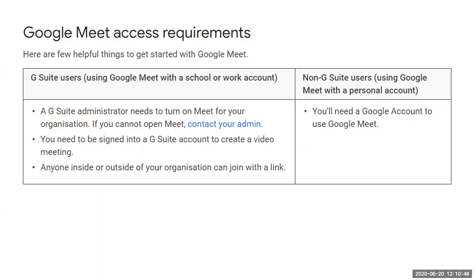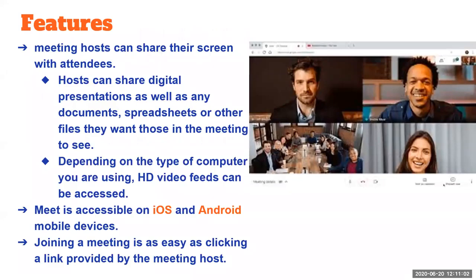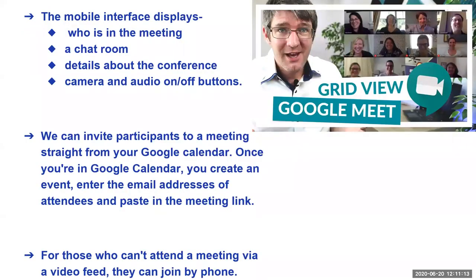Google Meet is one of the most easily used and mostly used platforms, apart from Zoom. Features are similar to Blue Button and Zoom. It runs on both iOS and Android platforms. Joining a meeting is very easy — just click and join. You get a grid view of around 16 people. You can also join by phone without video. Google Calendar and Google Classroom can be integrated, and there is a chat room and attendance facility.